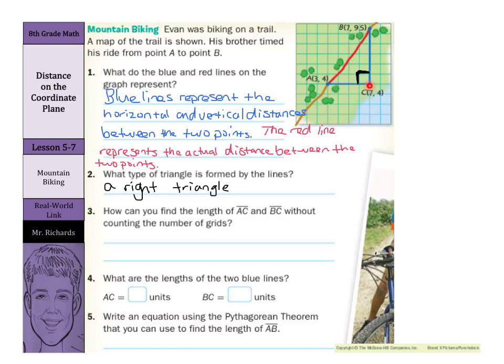Now, the question, though, asks us, how can we do that without counting the number of grids? Well, if we look at the ordered pairs, from A to C, my y-coordinates are both 4, so that's not going to help. But my x-coordinates are different. I could just do 7 minus 3, which is 4.